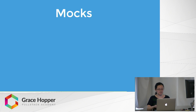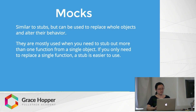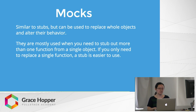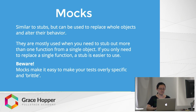The third and last type of test double is mocks. Mocks are similar to stubs but are another take on them — they can replace whole objects and alter their behavior. They're mostly used when you need to stub out more than one function from a single object. If you only need to replace a single function, use a stub because it's easier. Be careful when using mocks, because it's easy to make your tests overly specific on the exact implementation, making your code brittle and easy to break.